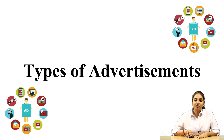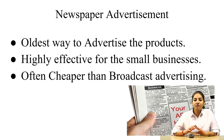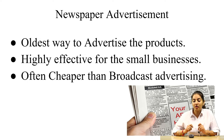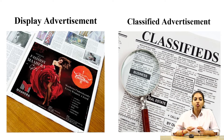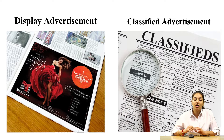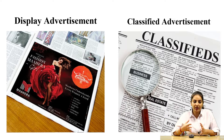Now we will discuss about the different types of advertisements. First is newspaper advertisement, and this is the oldest way to promote products. It is very highly effective for small businesses and it is often cheaper than broadcast advertisements. There are two types: first is display advertisement and the second one is classified advertisement. In the display advertisement you can see there is a picture, they have given the content, they have given all the logos and everything.